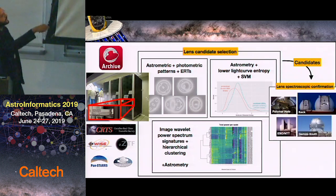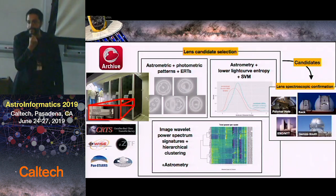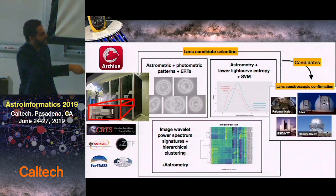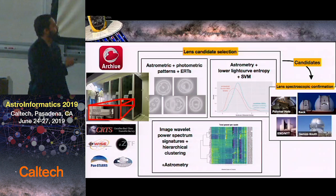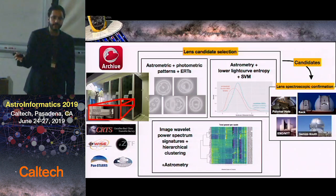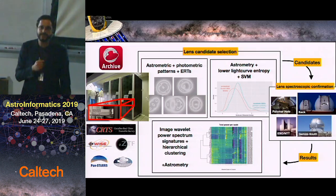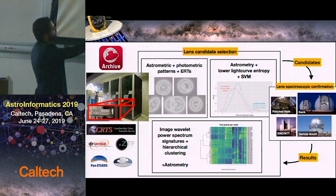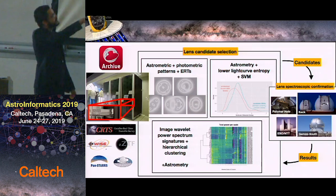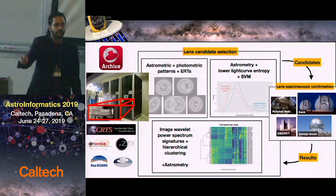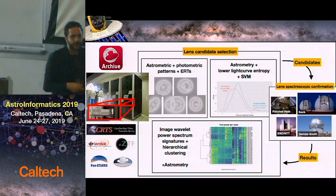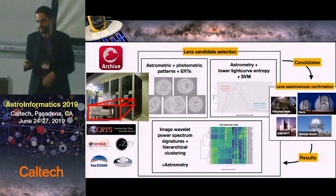Once we select candidates, they go to spectroscopic confirmation at ground-based telescopes. We use the Palomar Hale telescope together with Keck, ESO NTT, and Gemini South to confirm the lenses. We also implement continuous learning: at each batch of observations, the results feed back into the training of the supervised methods. This is essentially agile methodology applied to science.